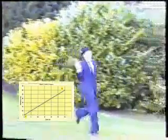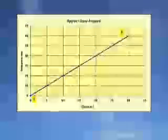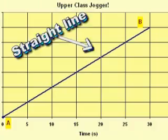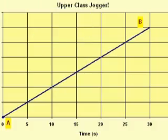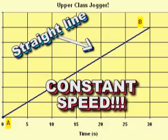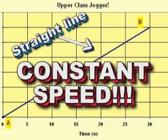I can see that our jogger is running at a constant speed of 2 meters per second. But how do I know that? Well, the fact that the graph is a sloping straight line tells me that the object is traveling at a constant speed. That applies to all objects and all distance time graphs: straight line, constant speed.